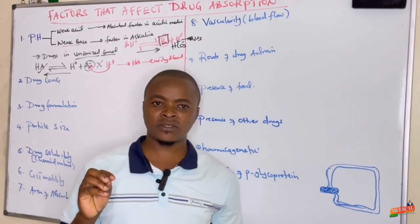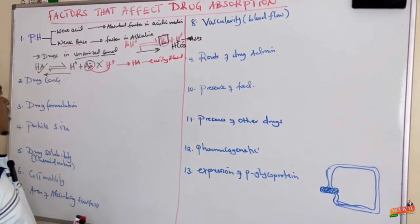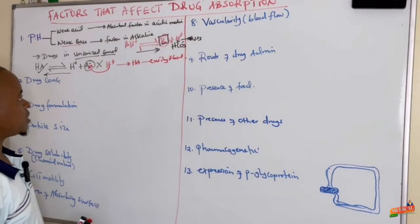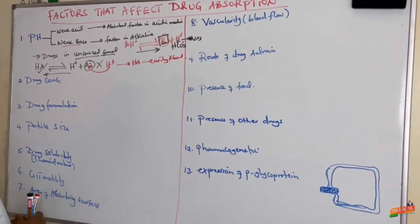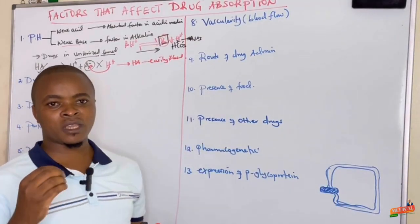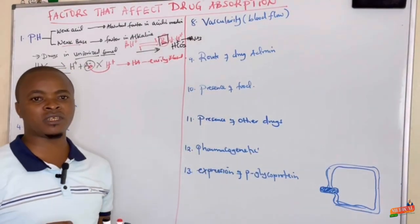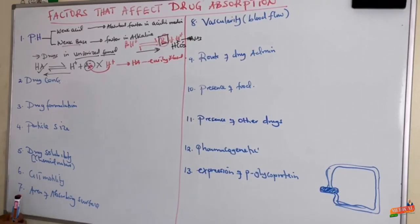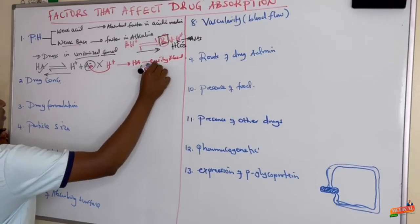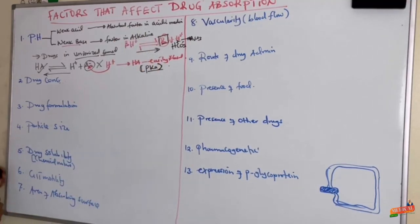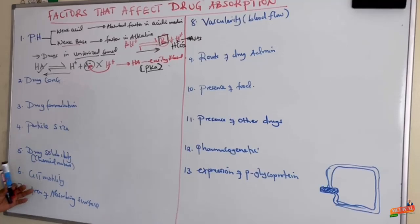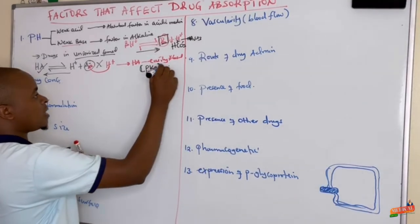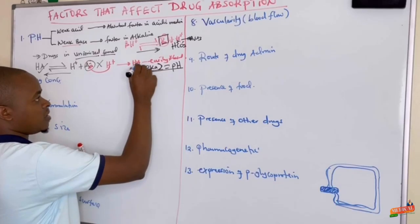In summary, weak acidic drugs are absorbed faster in acidic media. For example, acidic drugs like aspirin are absorbed faster in the stomach where there is hydrochloric acid. This also depends on the pKa — when the pKa is the same as the pH, drugs are absorbed faster.